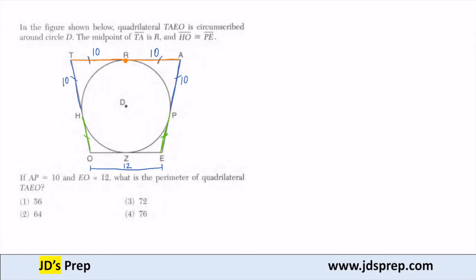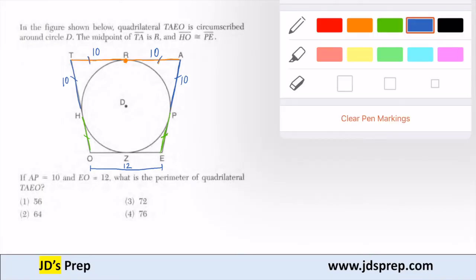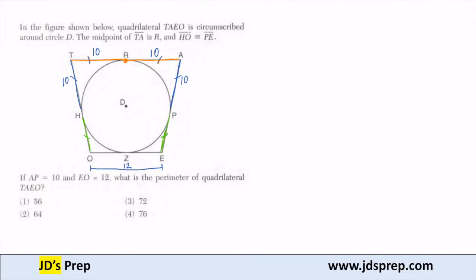With the same respect that AP has to be the same as that side. Now let's go to the bottom. I have HO is congruent to PE, so I know those have to be the same. I also know by HL that HO and ZO are the same. So I know these two sides are the same. And I know ZE is congruent to PE. So these two sides are the same.